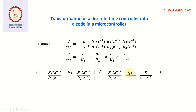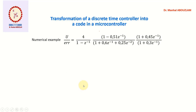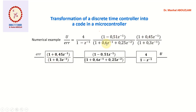We now propose a numerical example with three blocks. We consider our block diagram: we start with the first block, then add the next block, then the last block. The input of our block diagram is the error and the output is the control input u. We place our intermediate variables: u1 here and u2 here. With the block diagram it is easier to visualize.